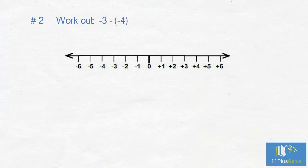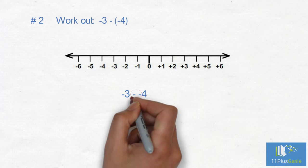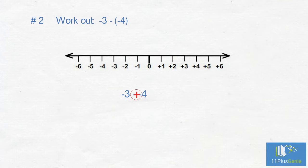Number two: Work out minus 3 minus minus 4. Here is the numbered line to help us. We have negative 3 subtract negative 4. A negative next to another negative gives us a plus, so we have negative 3 add 4.